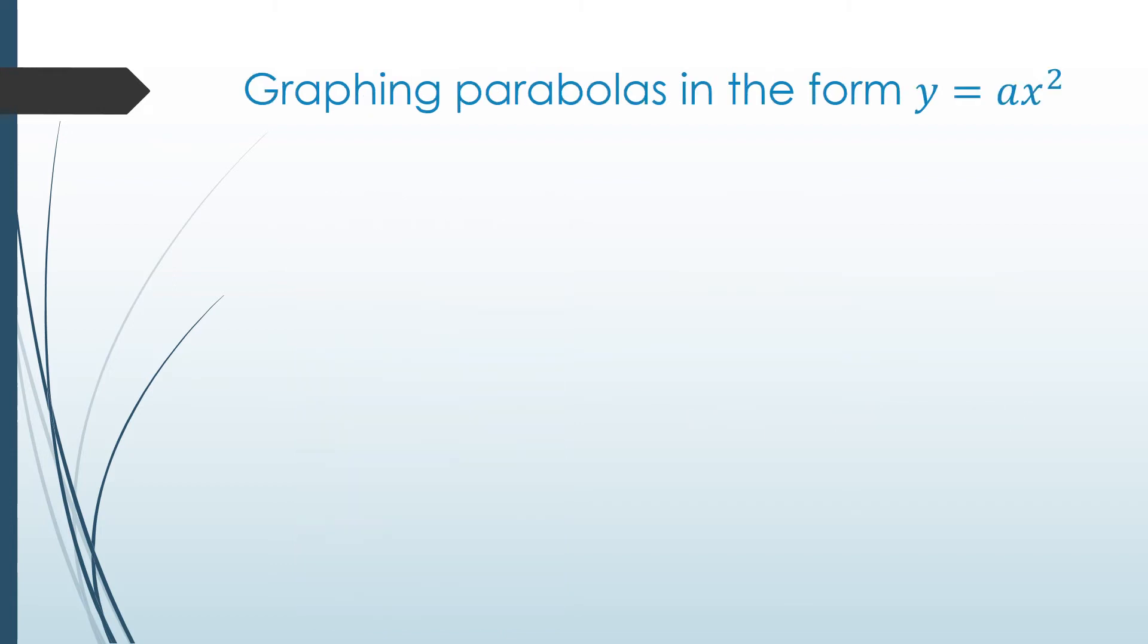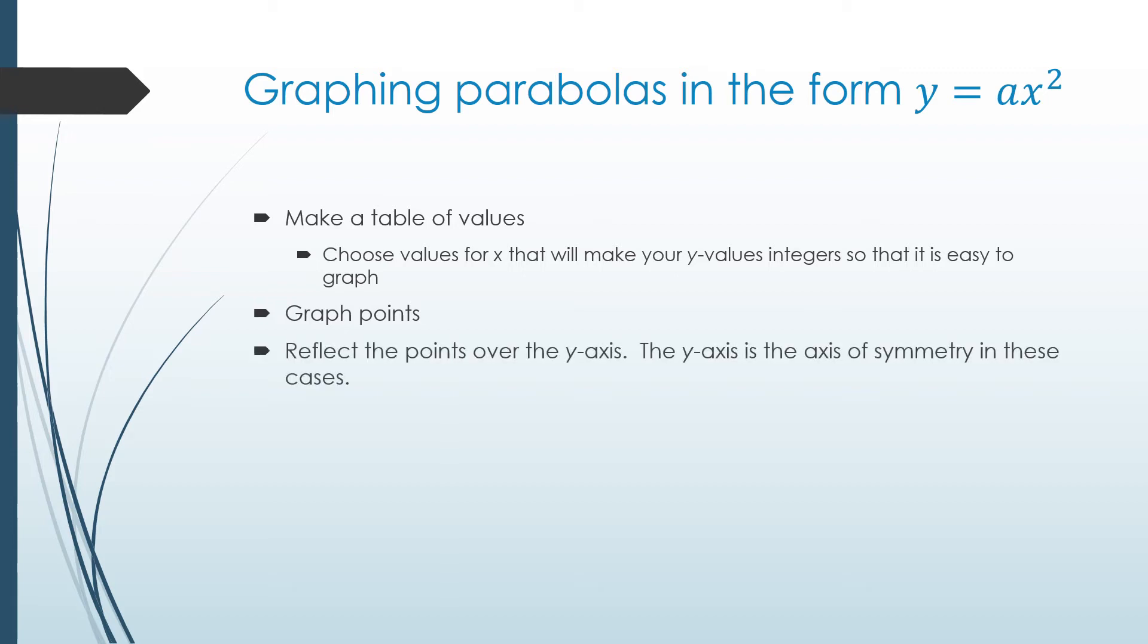Let's talk about graphing parabolas in the form y equals ax squared. First, make a table of values. Choose values for x that make your y values easy to graph. Then graph your points. Reflect your points over the y-axis. In this case, when you have y equals ax squared, the y-axis is the axis of symmetry. Connect the dots in a curve format and identify your domain and range if necessary.